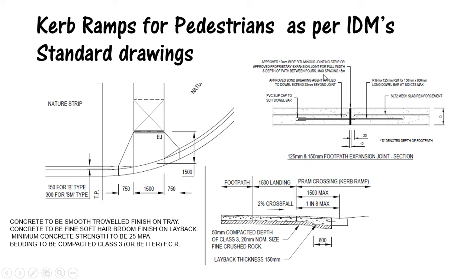The expansion joint includes a dowel wheel and PVC cap filling material. Concrete to be smooth trowel or marble finish is required for the ramp surface, and a broom finish is required on the layback. The strength of the concrete is required to be 25 MPa, and bedding is to be compacted to 99 percent dry density. These are requirements as per the IDM standard drawing.